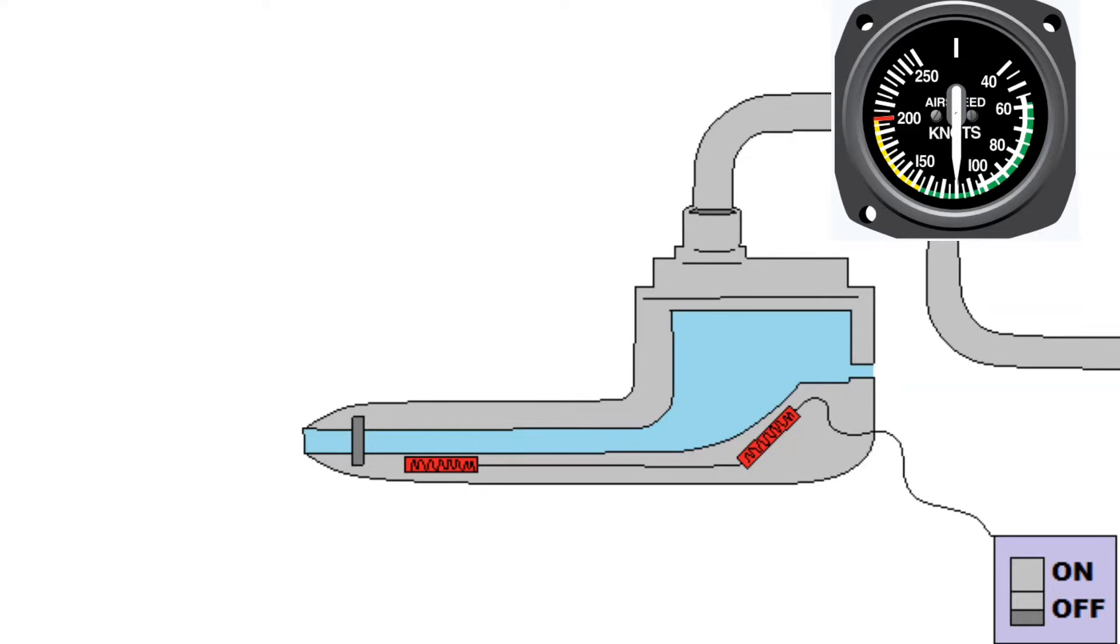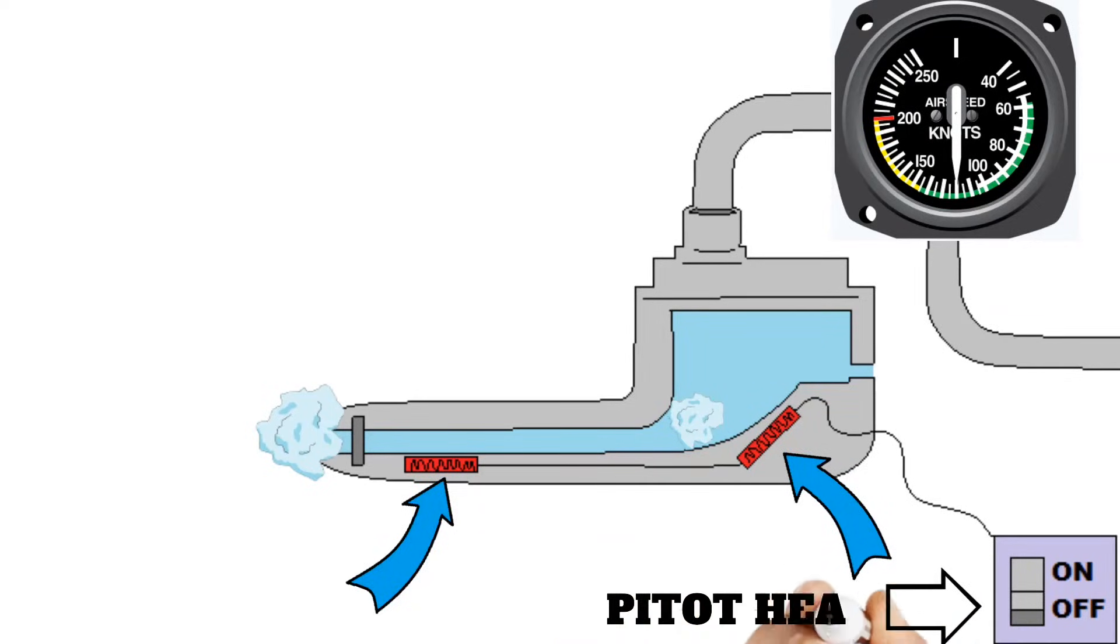But if the water freezes in or on the pitot tube then it could start clogging it up again. But that's what these little heating elements are for. You just turn the pitot heat on in your cockpit and it should heat these up enough to melt that ice.